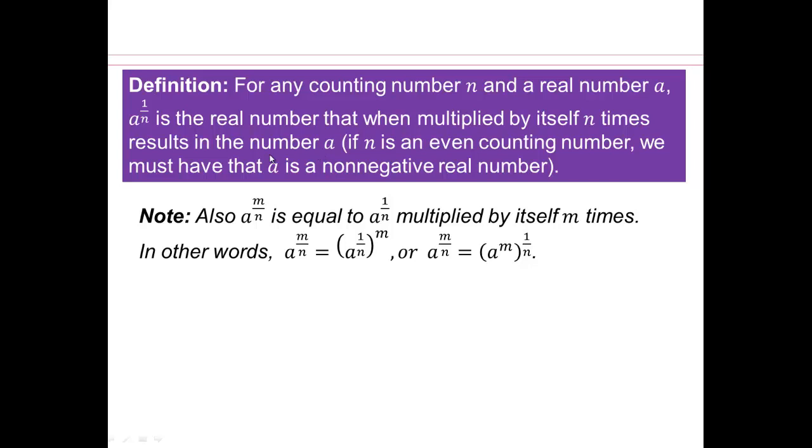So now note, if you have a to the power numerator, denominator. Numerator is m. Denominator is n. Then that is saying that it's a to the power 1 over n multiplied by itself m times that would look like this. You can also think of it as a to power m raised to power 1 over n. Either one of them interpretations are fine.